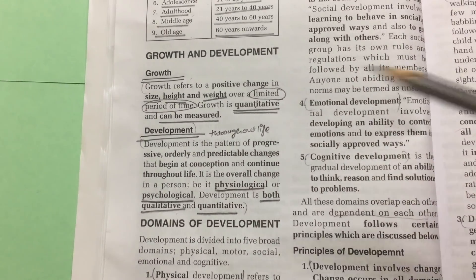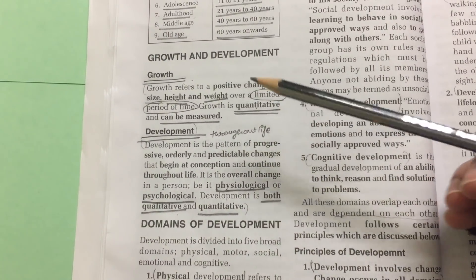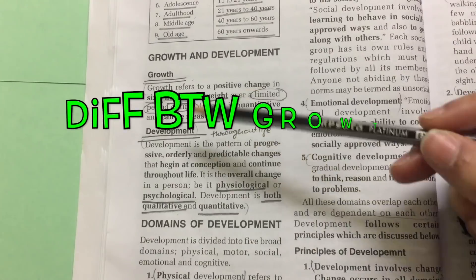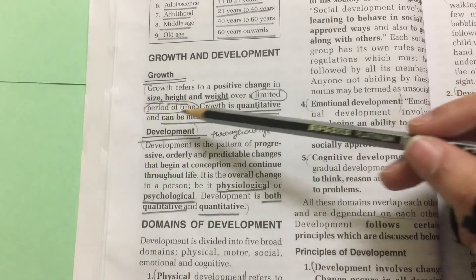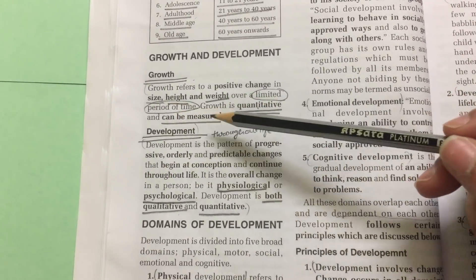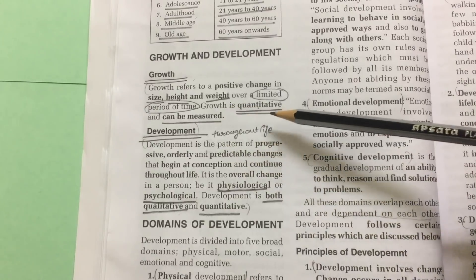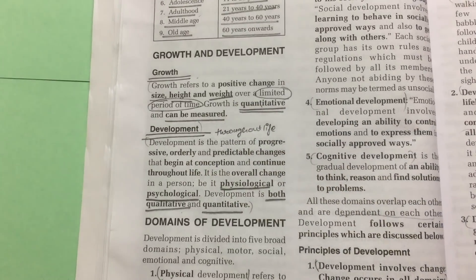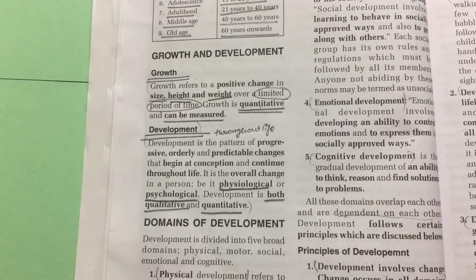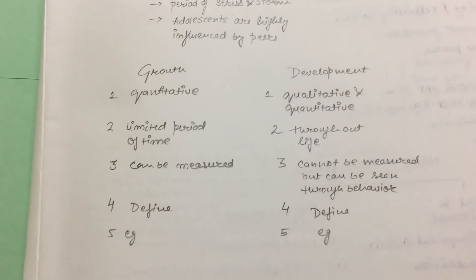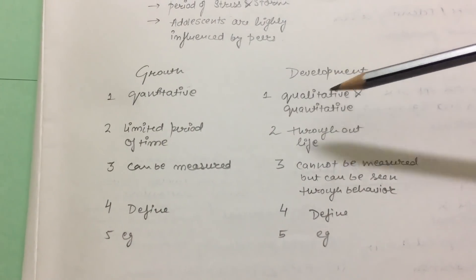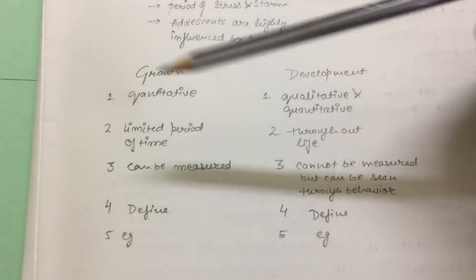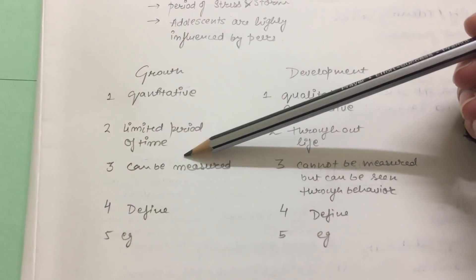There are two things: Growth and Development. Growth is defined as a positive change in size, height, and weight over a limited period of time. Growth is quantitative and can be measured. Development is qualitative as well as quantitative. Growth is limited to a period of time.